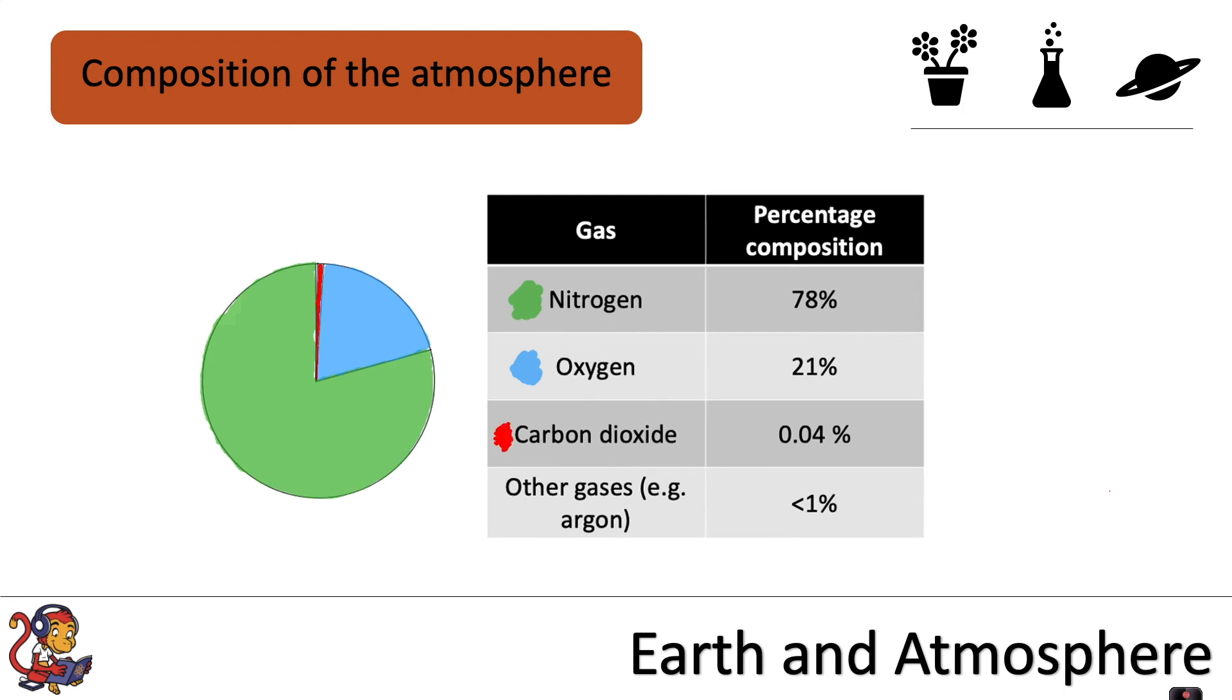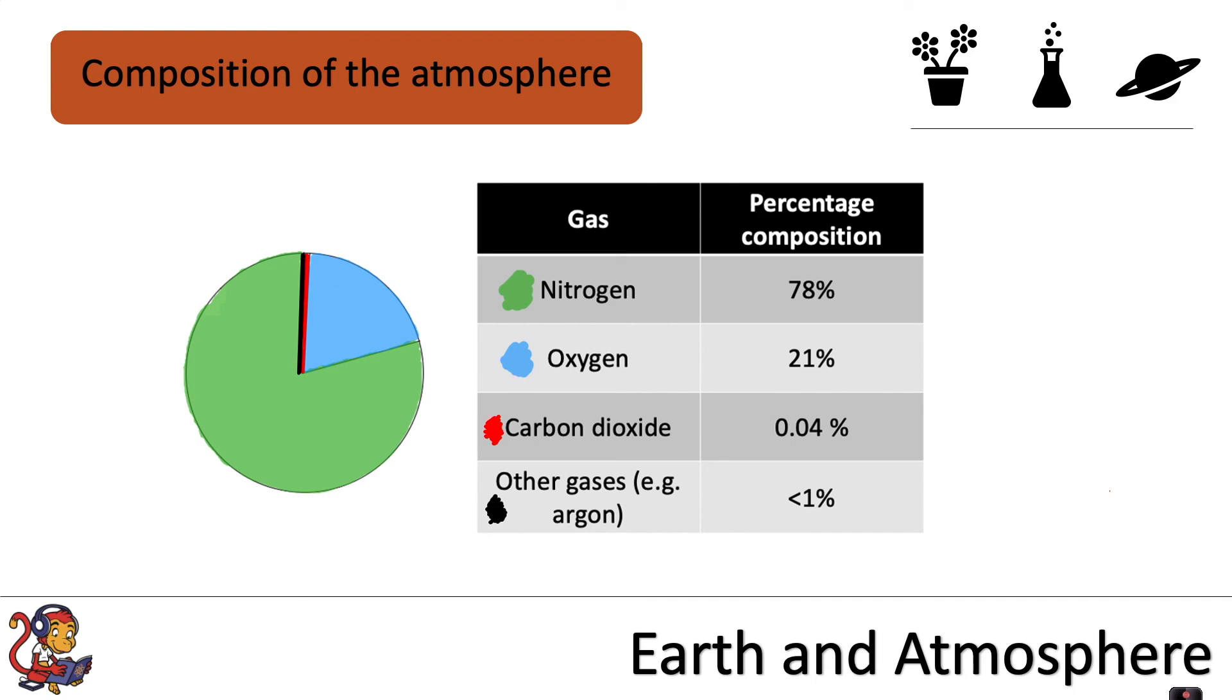Carbon dioxide, which is greatly talked about in terms of global warming and climate change, only makes up around 0.04% of the atmosphere. So it's a tiny percentage of the atmosphere, but it's still causing a problem. And that percentage of carbon dioxide in the atmosphere rising is what's causing us great concern. And there are some other gases, for example, argon in tiny amounts in the atmosphere, altogether making up the rest of the atmosphere. But they are around less than 1% altogether.